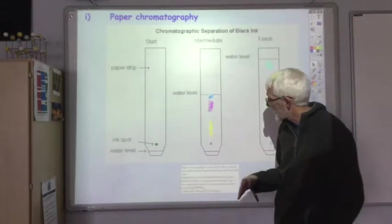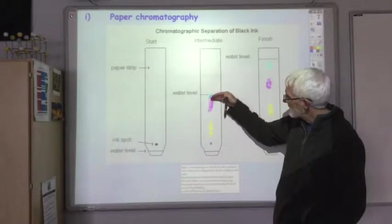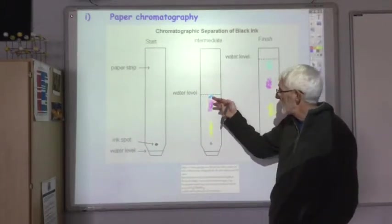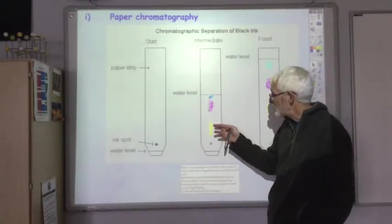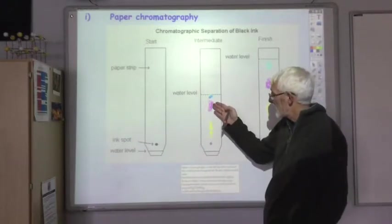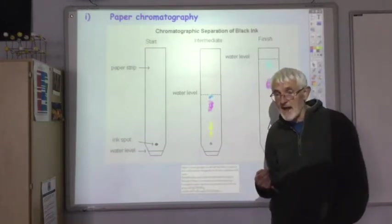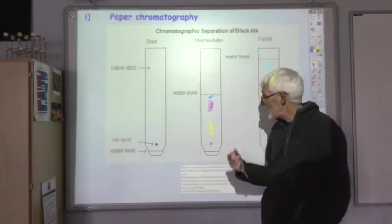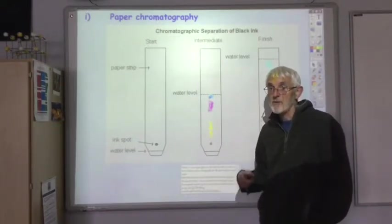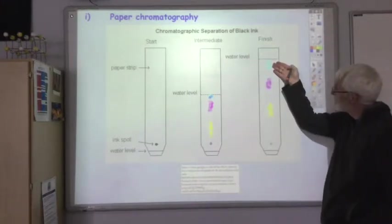The water will gradually soak up, hit the ink spot, and then continue to travel up the paper. So what we see as water travels up is that some of the dyes present in black ink move up very quickly with the water, some less so, and some not at all. Whether or not they move quickly, slowly, or not at all depends on the polarity of the dye. In this case, the water is a very polar solvent.